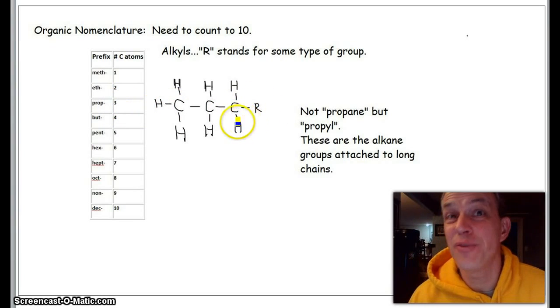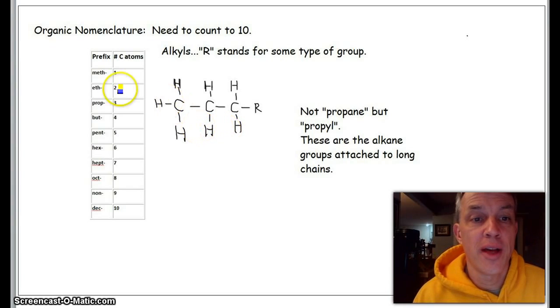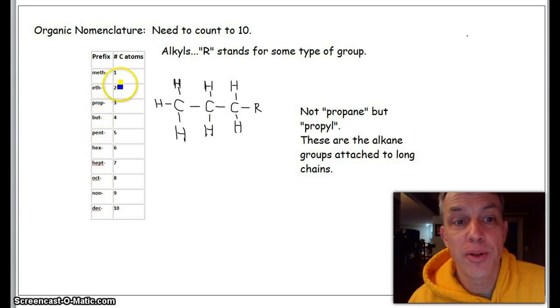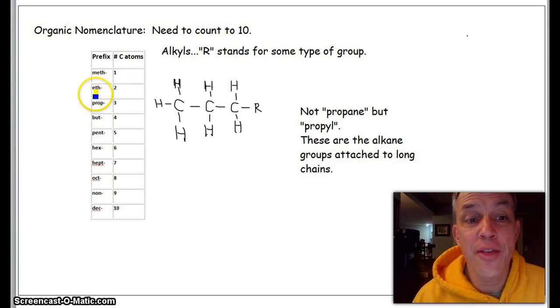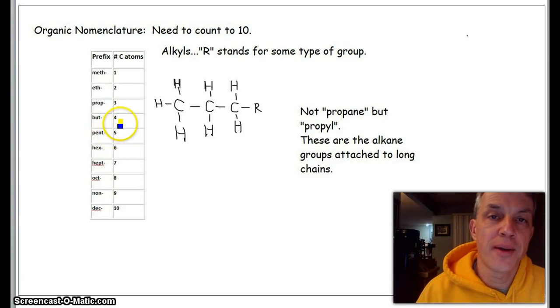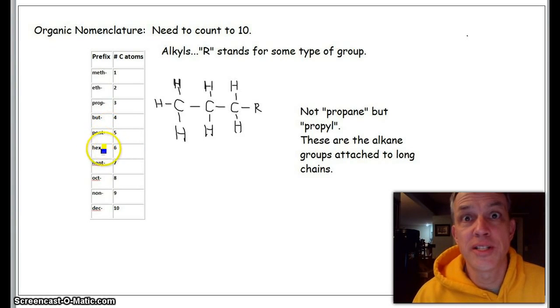If this R were an H, we would call it propane. But when there's one H missing and everything else is there, it's called propyl. So you can imagine instead of having CH4, if we get CH3 bonded to something, it would be called methyl, ethyl, propyl, butyl, pentyl, hexyl, and so on.